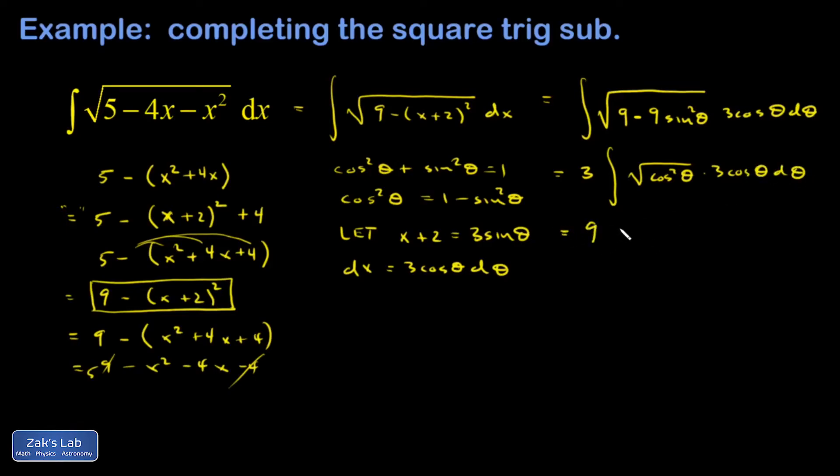So I get 9 times the integral of cos²θ dθ. I have to use an identity on this: cos²θ = ½(1 + cos(2θ)). Let's pull the ½ out in front, and I end up with 9/2 times θ plus ½ sin(2θ) plus C.